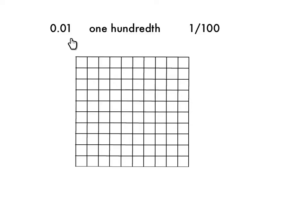Now let's shade in one-hundredth, which is the same as the fraction one-hundredth. Here is my whole, and I can see that there are ten squares going this way and ten squares going this way, which means that it's an array made up of a hundred equal size pieces. So if I want to do one-hundredth, I'm going to shade in just one of those squares. That represents one-hundredth.